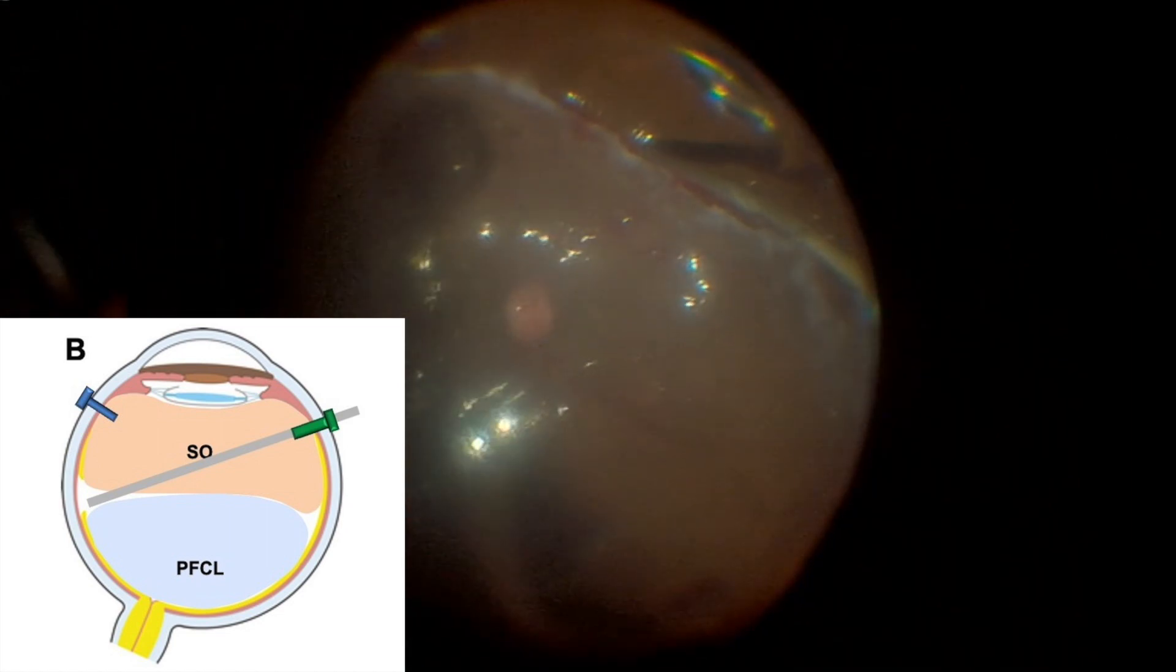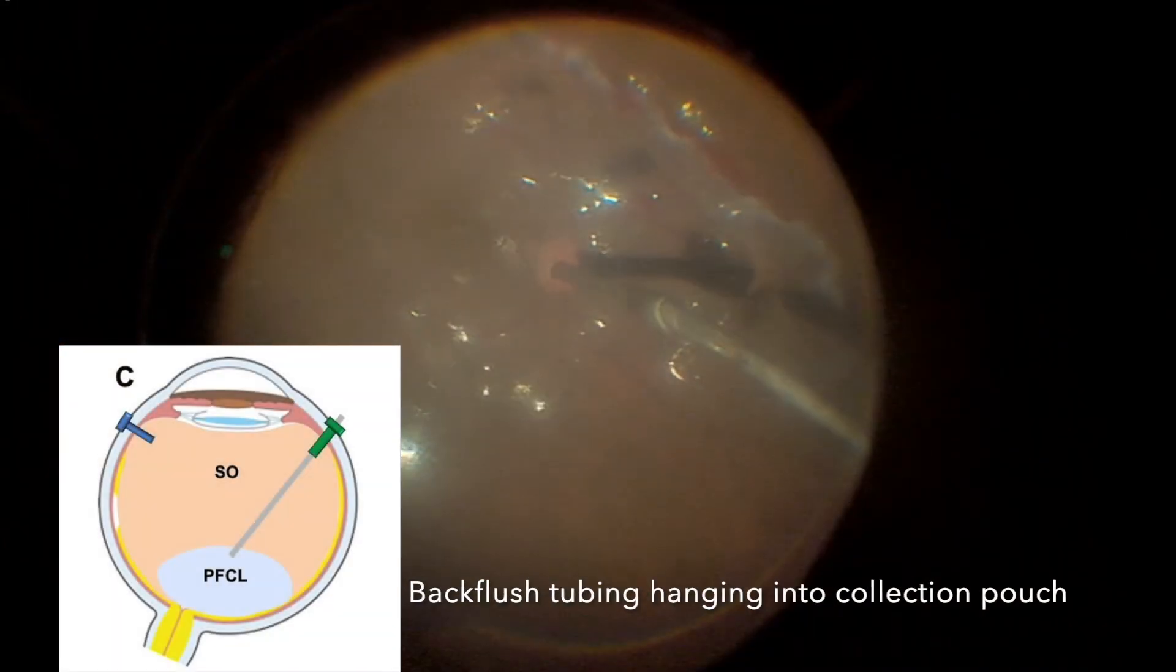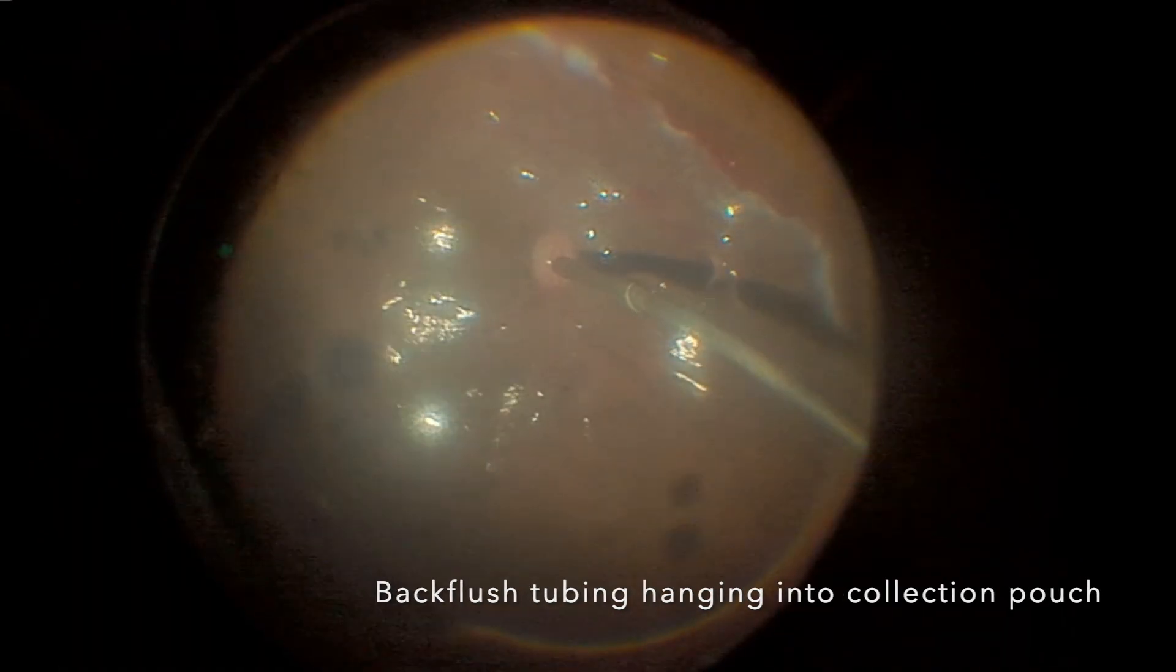If you change from 25 to 20, you have 2 times increased outflow of PFCL. From 25 to 23, 1.5 times increased outflow of PFCL.